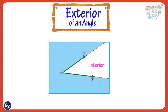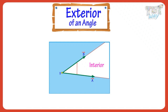Exterior is the space outside the two straight lines. It extends even beyond the ends of line segments. Here, the area marked with blue is the exterior of the angle.